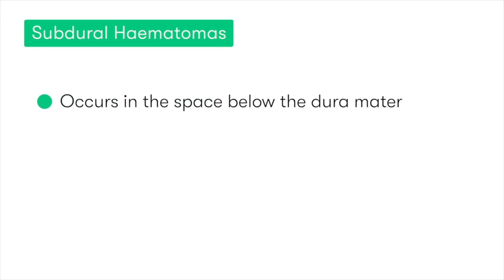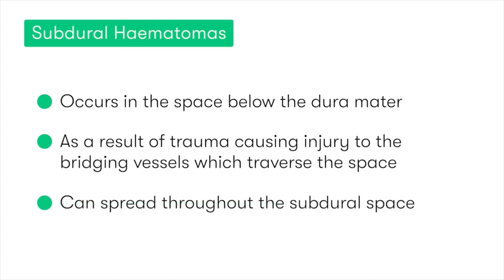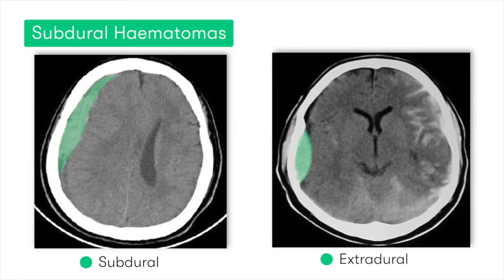Moving on to subdural hematomas, as the name suggests, this bleed occurs in the space below the dura, so between the dura and the arachnoid mater. Subdural hematomas typically occur as a result of trauma causing injury to the bridging vessels which traverse this space. Unlike extradural or epidural hematomas, in which the spread of the hematoma is restricted by the fusion of the dura and the sutures of the skull, in subdural hematomas they do not have this issue. As a result, the hematoma which develops can actually spread throughout the subdural space, typically resulting in a crescent-shaped appearing hematoma, which is particularly contrasting to the lenticular-shaped extradural or epidural hematoma discussed earlier.